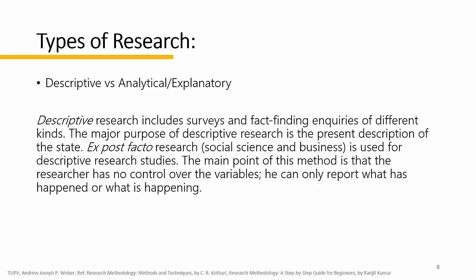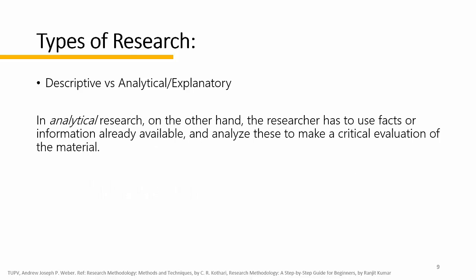The researcher can only report what has happened or what is happening. The previous examples showed are examples of descriptive research — they did not intervene, they just recorded what they observed and reported it. The researcher holds no control over the variables; they only report.